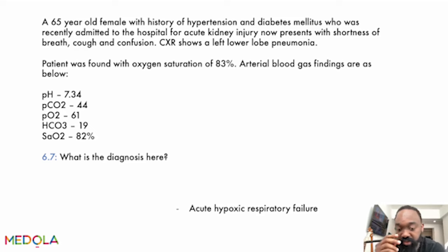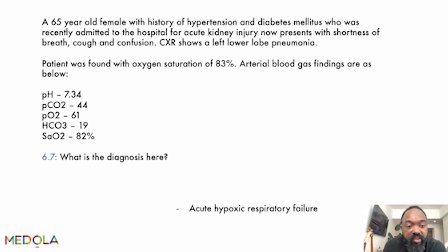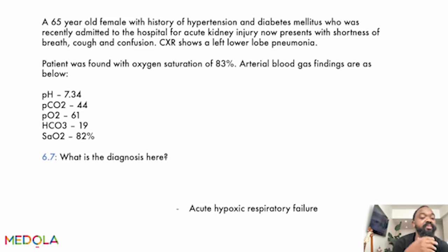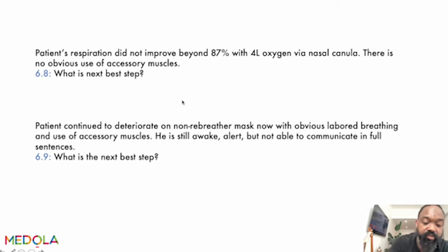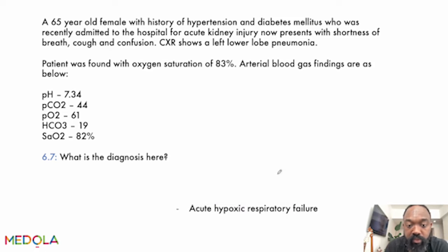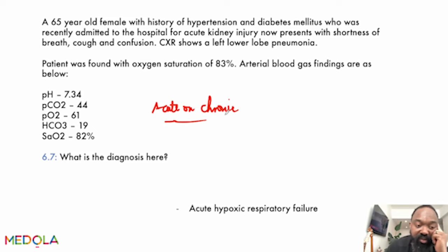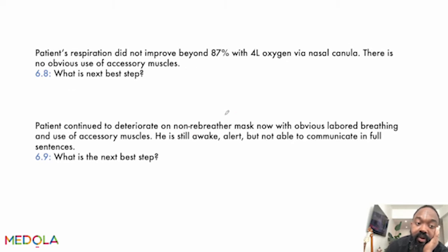The answer is acute hypoxic respiratory failure. The oxygen saturation is clearly low and persistent. Note we say 'acute' because the patient may also have a history of chronic hypoxic respiratory failure — meaning they were already on home oxygen. In that scenario, the diagnosis would be acute-on-chronic hypoxic respiratory failure. Here, there is no such prior history, so it is simply acute hypoxic respiratory failure.